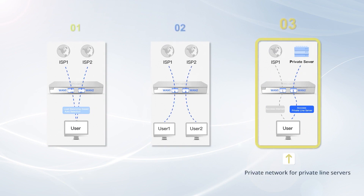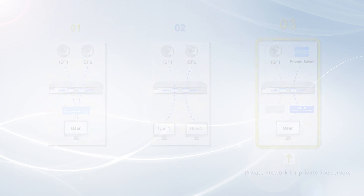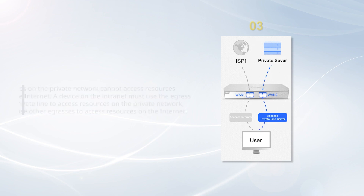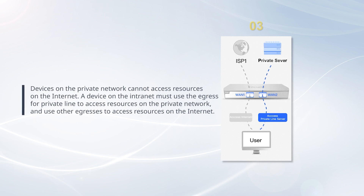Scenario 3: Private network for private line servers. Devices on the private network can only access resources on the private network. An example is the financial private network of a company. Devices on the private network cannot access resources on the internet. A device on the internet must use the egress for private line to access resources on the private network, and use other egresses to access resources on the internet.